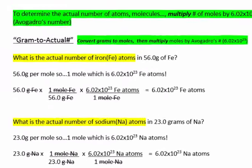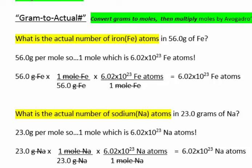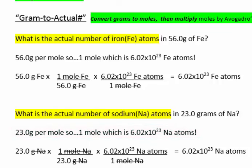Similarly, if we have 23 grams of sodium, the molar mass of sodium is 23. If we are told that we have 23 grams of sodium, well, that's a mole, and one mole is 6.02 times 10 to the 23rd. The math setup is identical to the one for iron, except that we're using a different mass, 23, and the molar mass of sodium is 23 grams per mole.